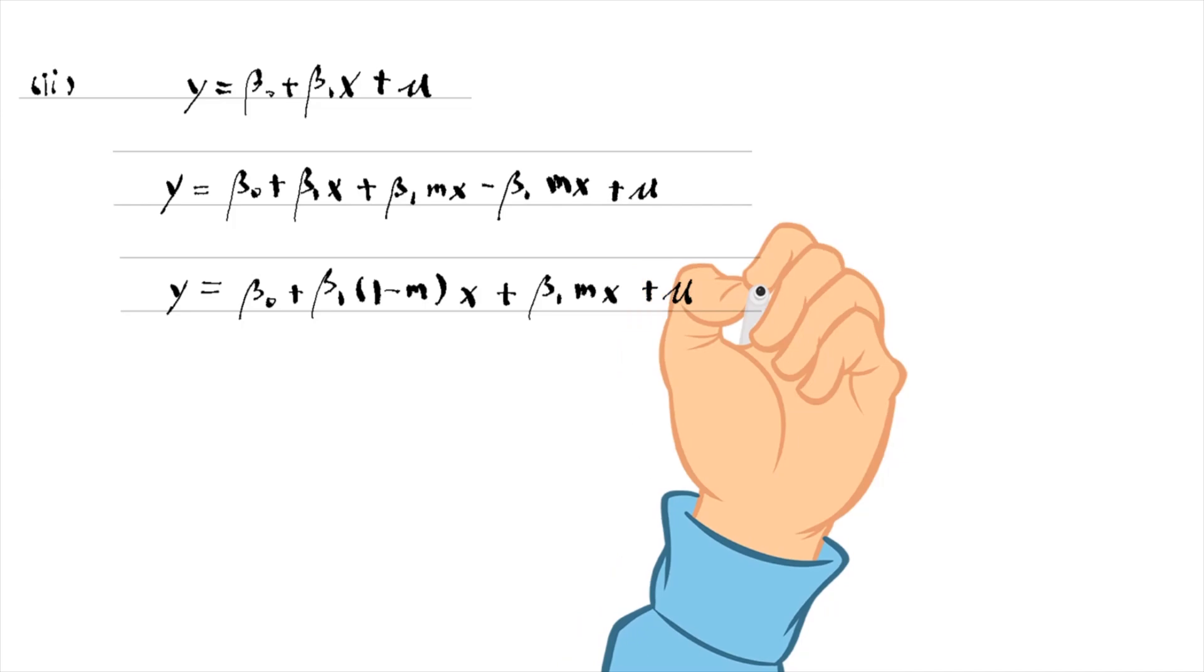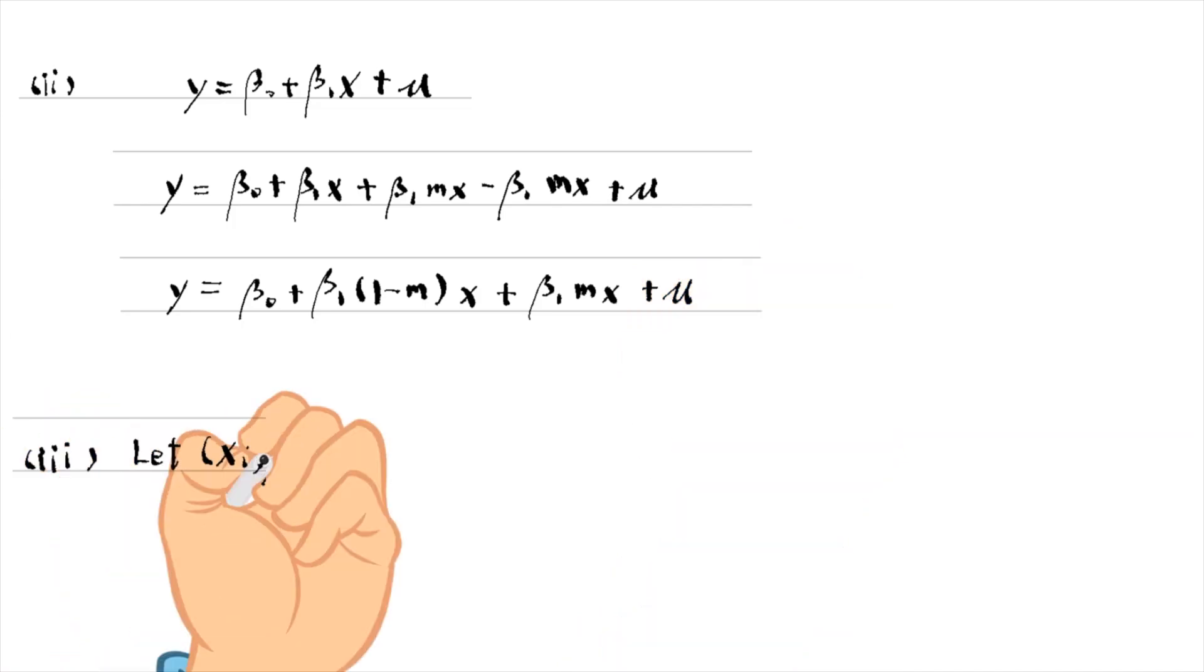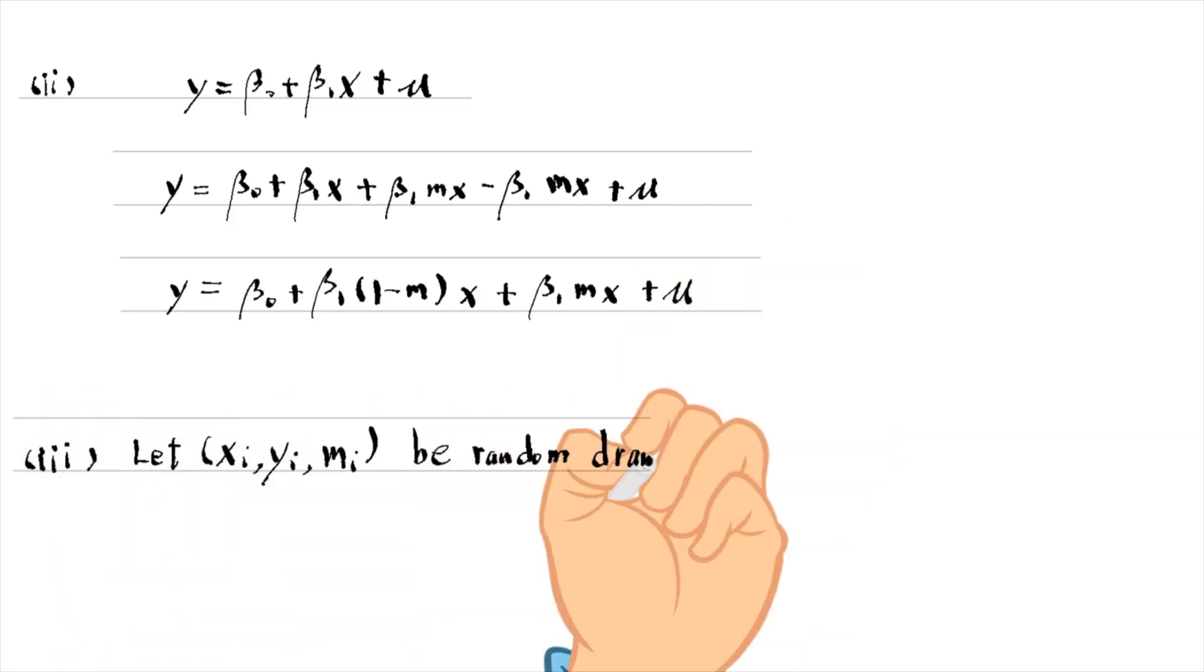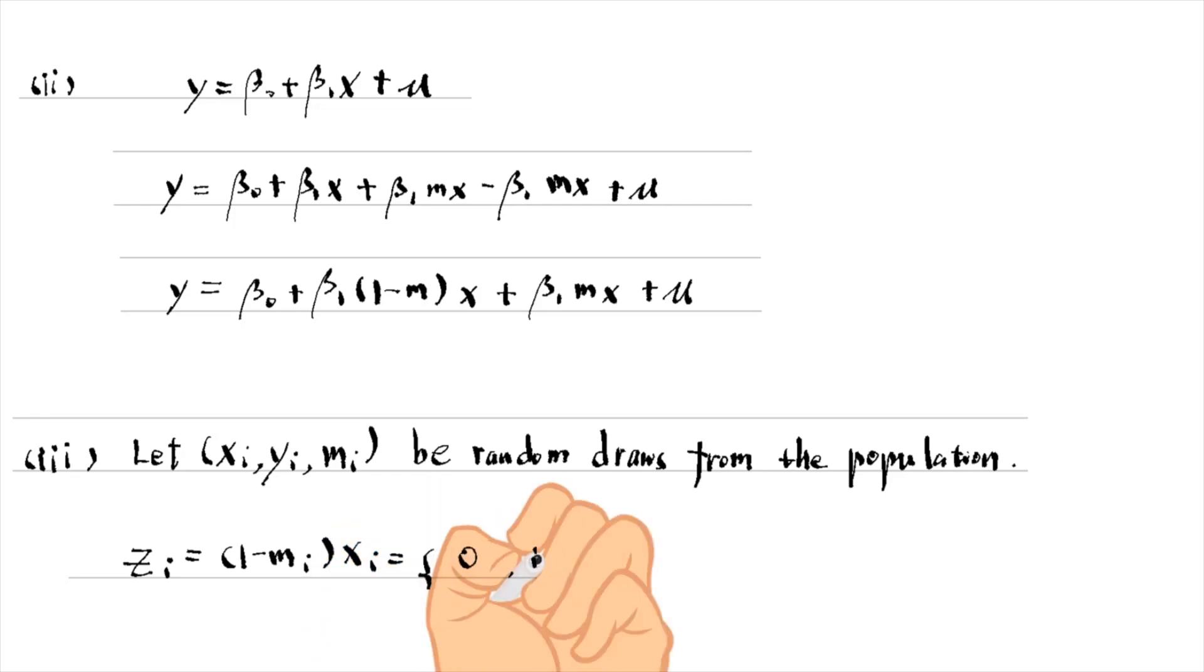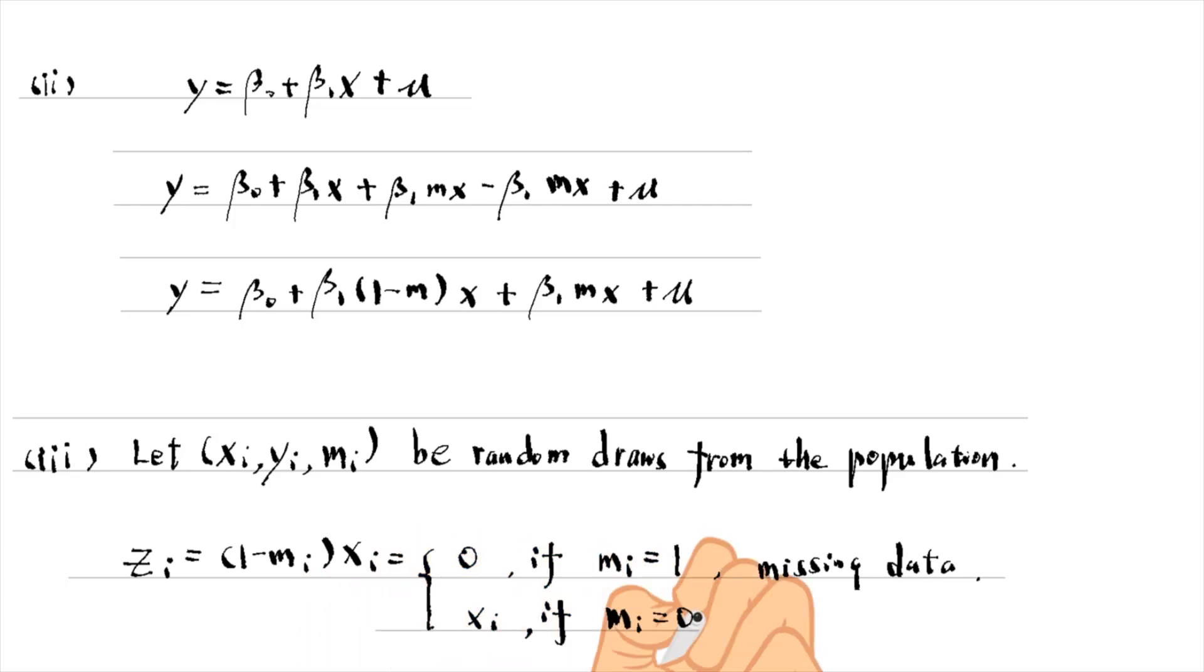In part 3, let xi, yi and mi be random draws from the population. The variable zi equals 0 if mi is 1 for missing data. z equals xi for observed data.